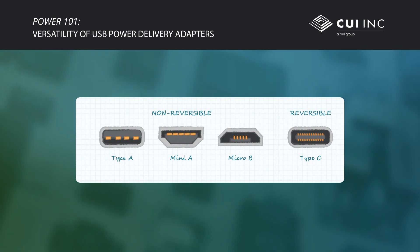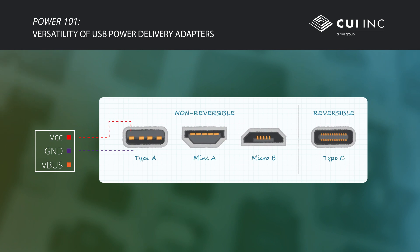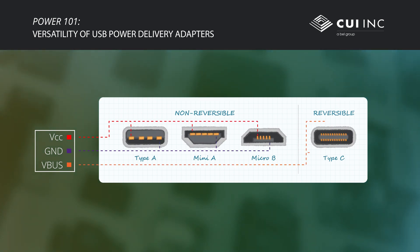USB has lived up to being the universal serial bus, even as it's evolved over the years. One of the benefits of USB is the power it provides to devices, and just as data rates have gone up, so too have power levels.